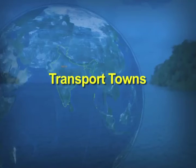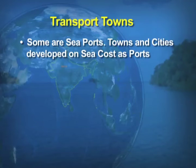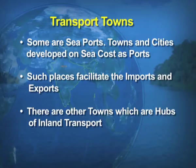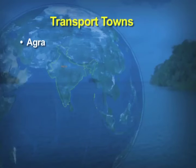Industrial towns are towns which grow due to industrial development. Examples are Jamshedpur, Durgapur, etc. Transport towns include seaports which facilitate imports and exports, as well as towns which are hubs of inland transportation — for example, Agra, Katni, and Etarsi.